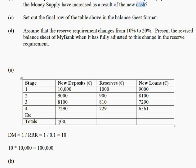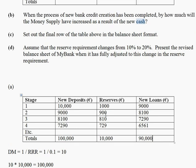You multiply your deposit multiplier by your initial deposit of 10,000 euros, which gives us 100,000 euros — that is the total of the new deposits column. We know 10% of that stays in the bank as reserves, so 10% of 100,000 is 10,000, and the remainder is lent out in the form of new loans, which gives us our total for the new loans column. That completes part A.